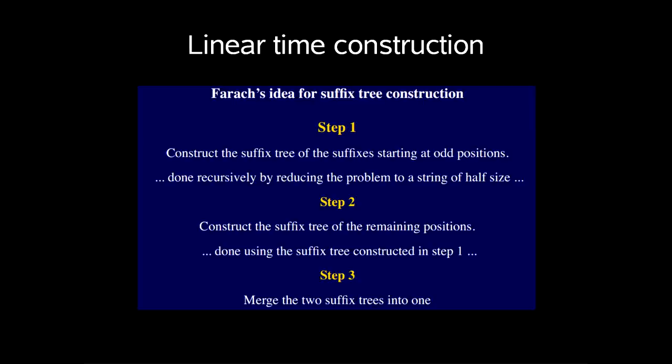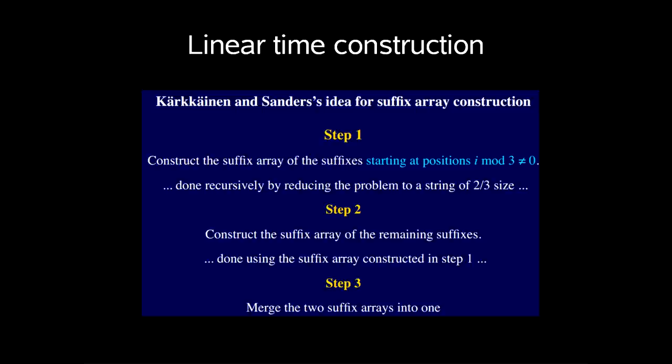For the linear time construction we start by looking at Farach's idea for suffix tree construction, which in step 1 we construct the suffix tree of the suffixes starting at odd positions. This is done recursively by reducing the problem to a string of half size. In step 2 we construct the suffix tree of the remaining positions using the suffix tree constructed in step 1. In the last step we merge the two suffix trees into one. Karkanian and Sanders' idea for suffix array construction is based upon this and is very similar. In step 1 to construct the suffix array of the suffixes starting at position i mod 3 different from 0 is done by recursively reducing the problem to a string of 2 thirds of its size. Step 2 is to construct the suffix array of the remaining suffixes using the suffix array previously constructed in step 1. And again in step 3 we merge the two suffix arrays into one.